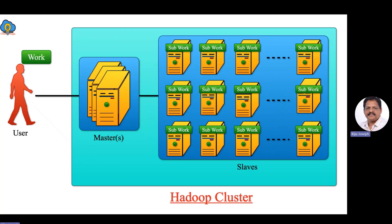As you see, this ecosystem has masters and slaves. It is designed to scale up from a single server to thousands of machines, each offering local computation and storage. So as you see, many computers, each one has local computation and storage.